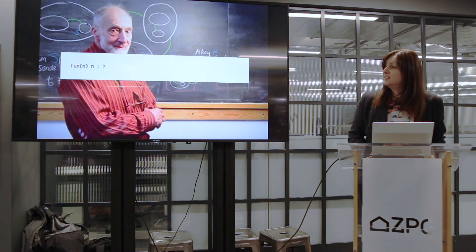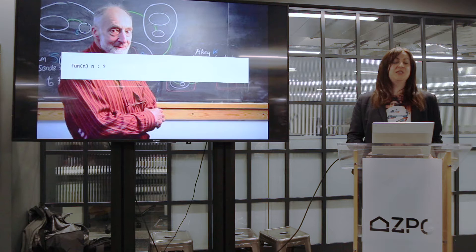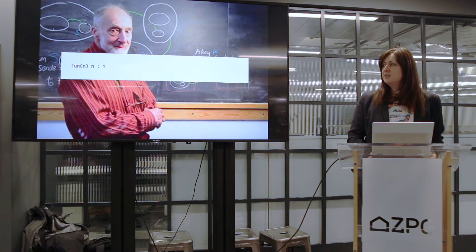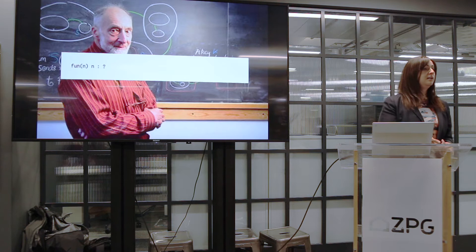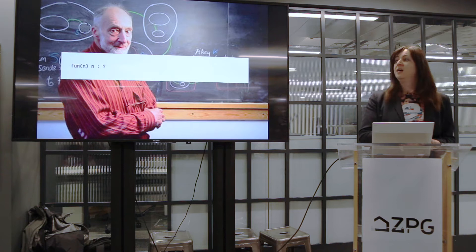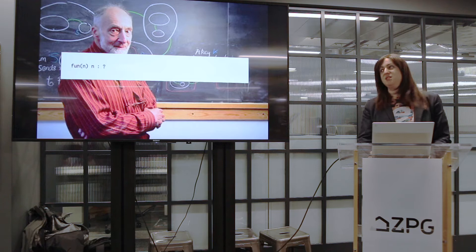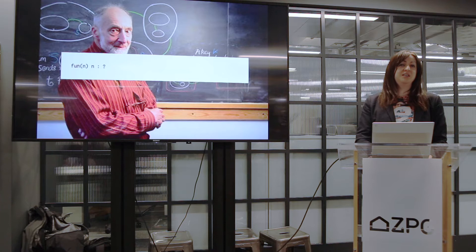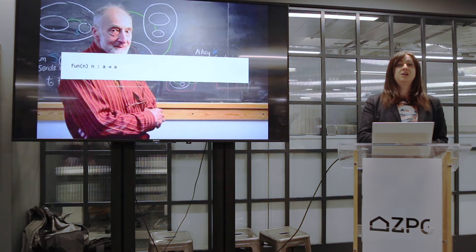How about this one? Function n, n — this is the classic identity function. How do you type the identity function? For this we're going to have to introduce a new concept. This could be int to int, bool to bool, or even function from int to bool to function from int to bool. Because this could be any type, we have the idea of type variables. We write type variables as lowercase letters, just by convention. So this is a function from a to a, which tells us we don't know what type a is, but the input and the output are going to have the same type.